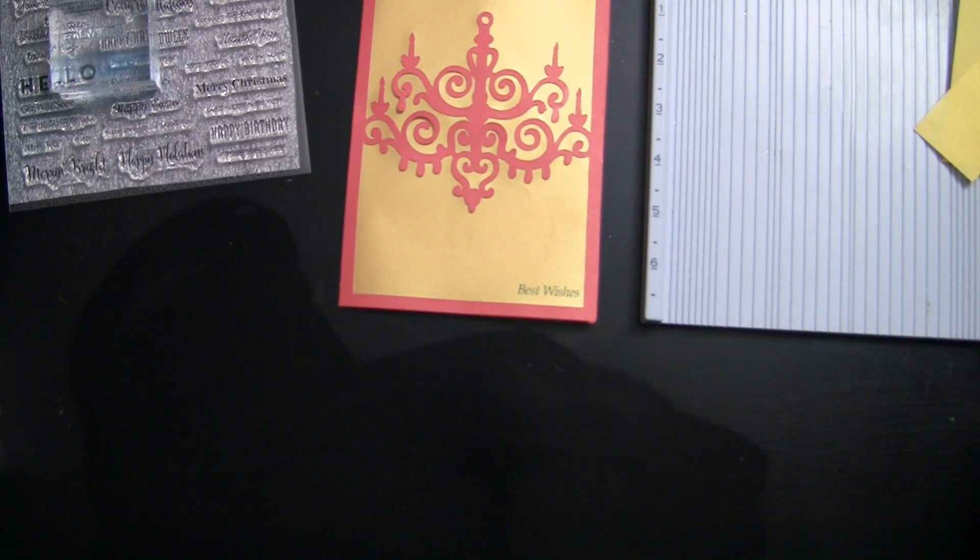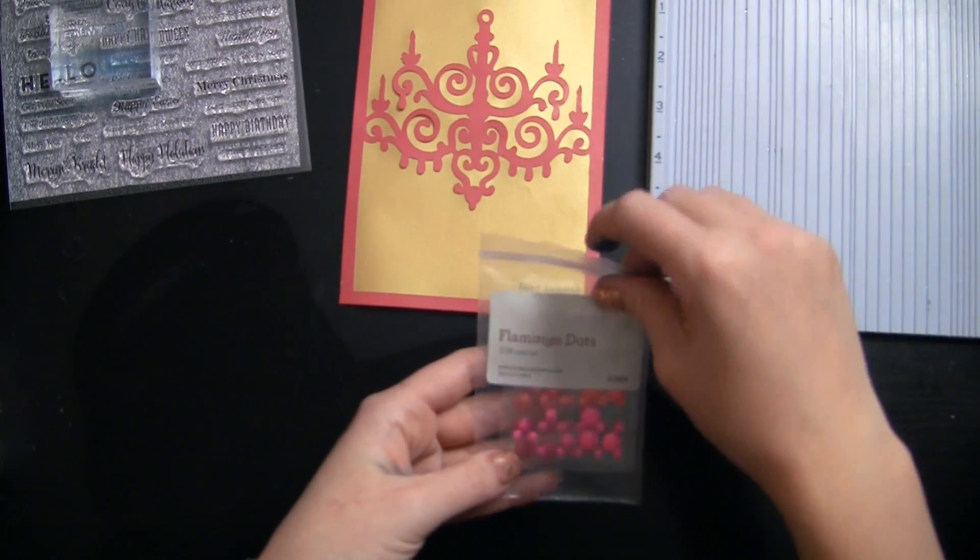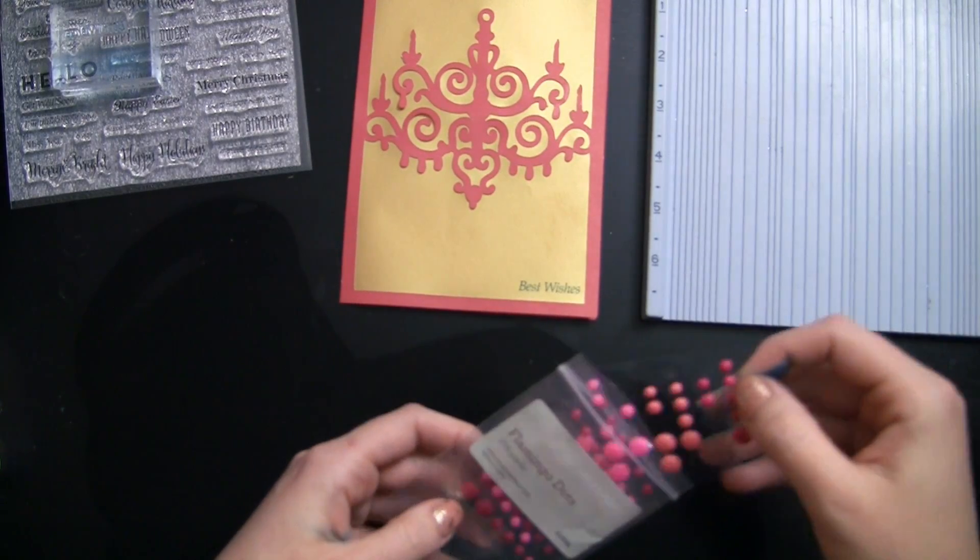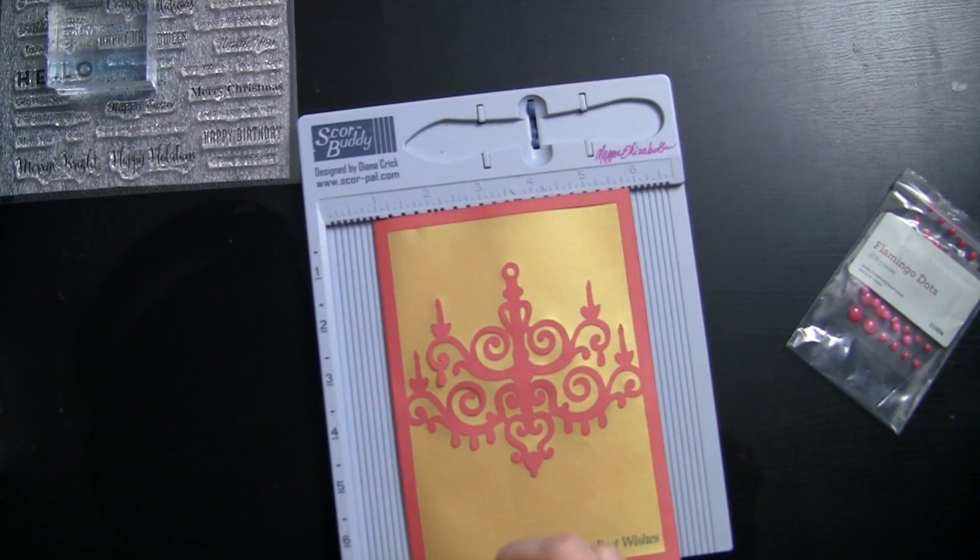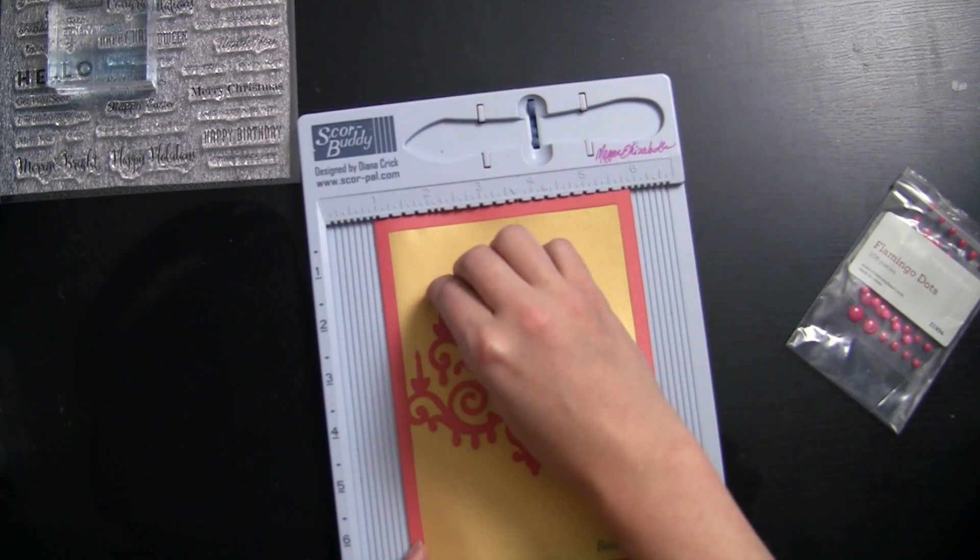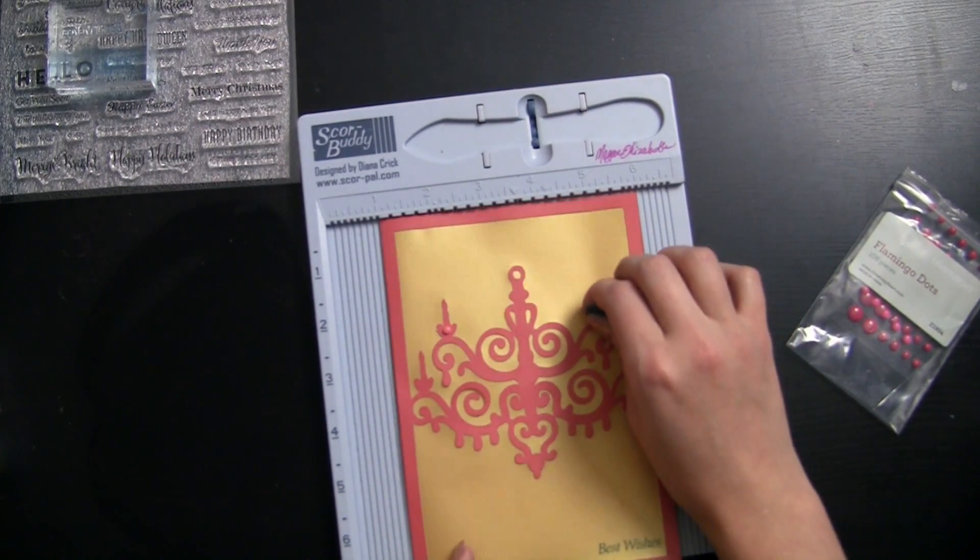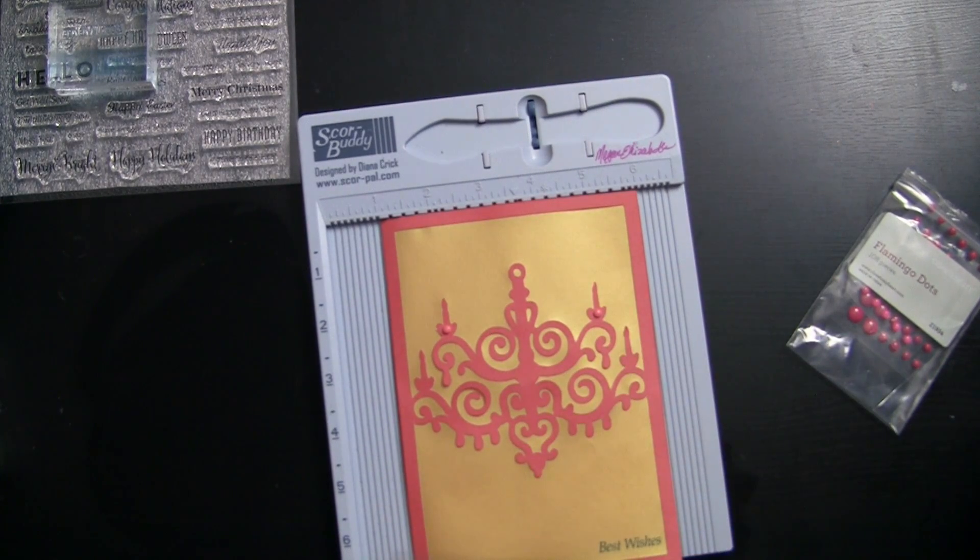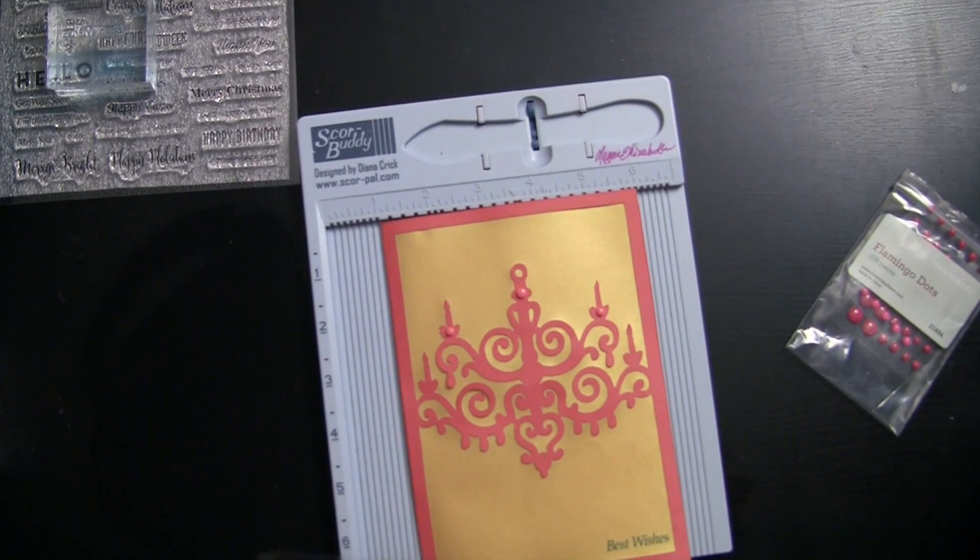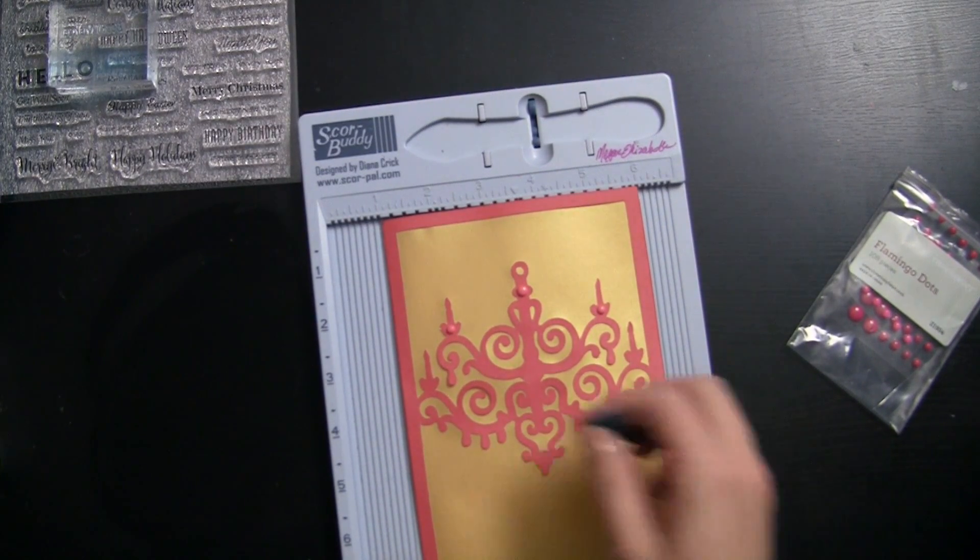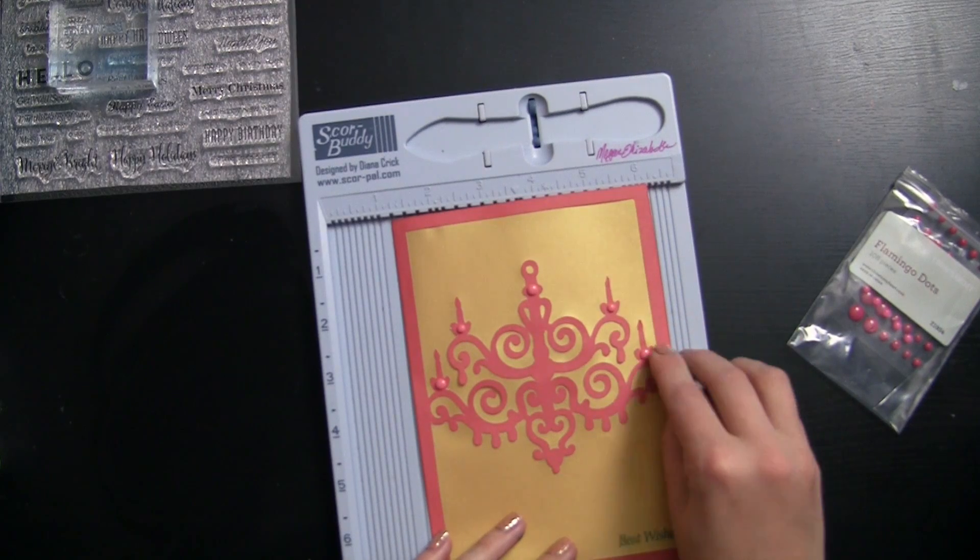And then for this, I actually pulled out the flamingo enamel dots. These guys, and they coordinate really well. And I was just going to actually top the frame, the flames of what would be the candle with them. I'm not going to top it. I'm going to do it right down. I'm going to accent the candle holders a little better. There we go. But like, it's the same color. So it's cool. It just gives it a little bit of texture, dimension, what have you on there.